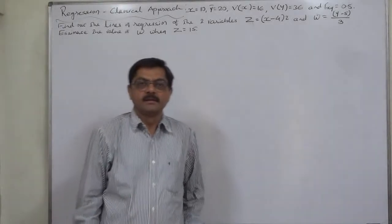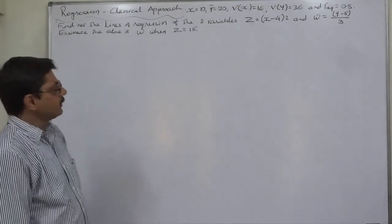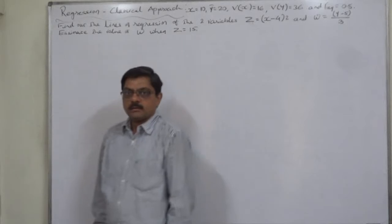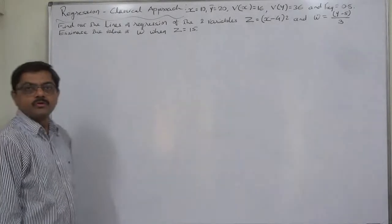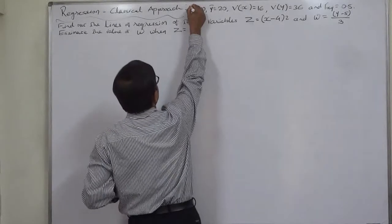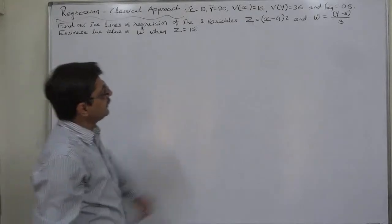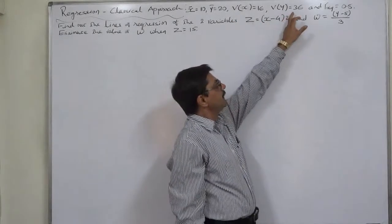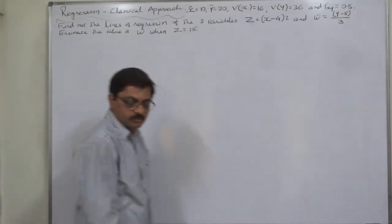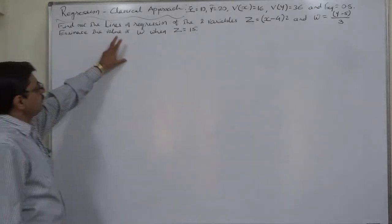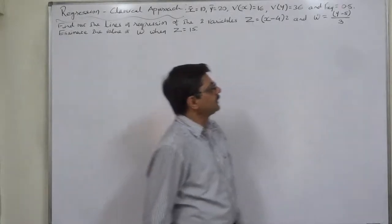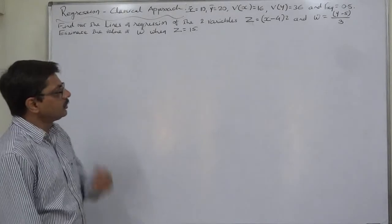Hello and namaskar. Linear regression — classical approach — and a new kind of problem that most of you are going to face for the very first time. The information available is: X-bar (mean of X) is 10, Y-bar (mean of Y) is 20, variance of X is 16, variance of Y is 36, and coefficient of correlation between X and Y is 0.8. Find out the lines of regression of the two variables Z equals (X minus 4) times 2, and W equals (Y minus 5) divided by 3.